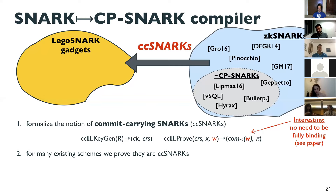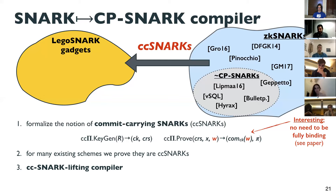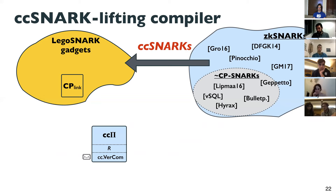We show that many existing ZK-SNARKs are also commit-carrying SNARKs — we do this in the paper, for example for Groth16 — and then we build a compiler that takes any commit-carrying SNARK and compiles it into a full-fledged commit-and-prove SNARK, where the commitment can be independent of the proof system.